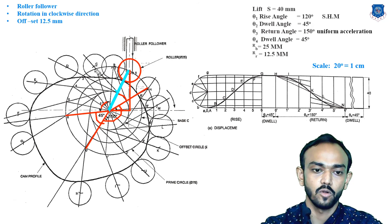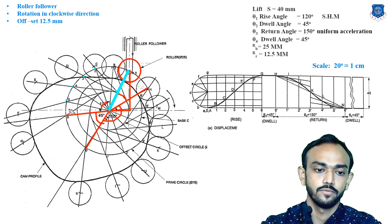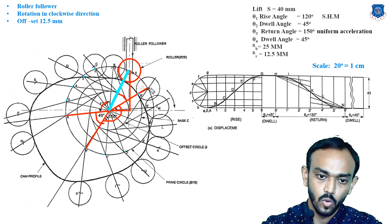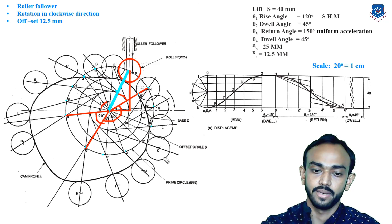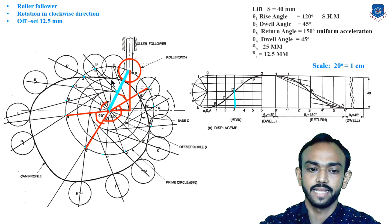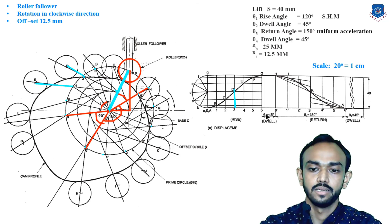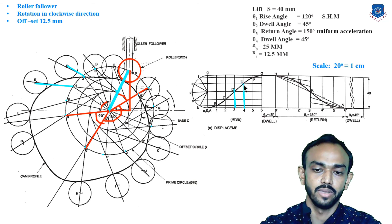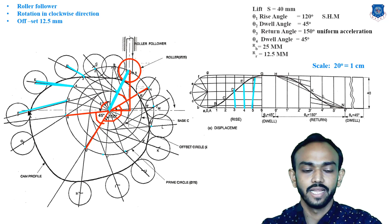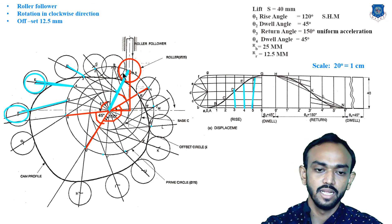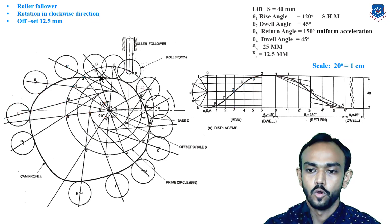After partitioning, you get points on the prime circle for rise (0, 1, 2, 3, 4, 5, 6) and for return (0, 1', 2' up to 6'). All points are on the prime circle. Then, for each point such as 3-to-D, take that distance using a compass, place the center at D, and draw an arc to locate the point. Do the same for 4-to-E, 5-to-F, and so on. Draw a roller circle at every point and draw the cam profile as a smooth curve tangent to every circle. That's the complete cam profile.